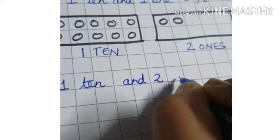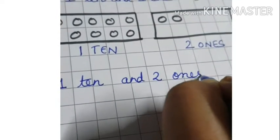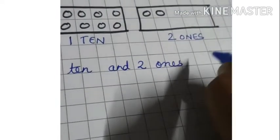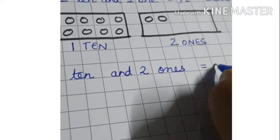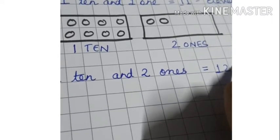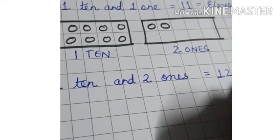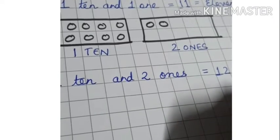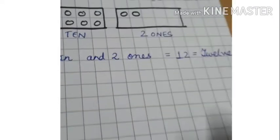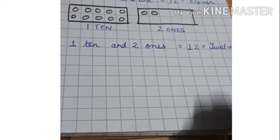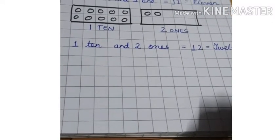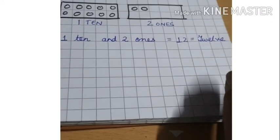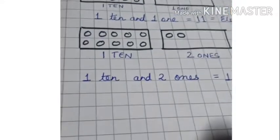1 ten and 2 ones is equal to 12. You have to write the spelling: T-W-E-L-V-E, 12. Can you see it? Very good!